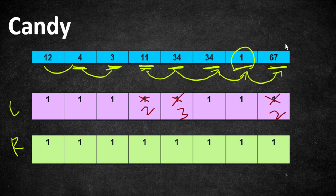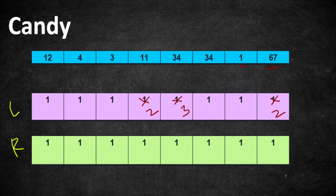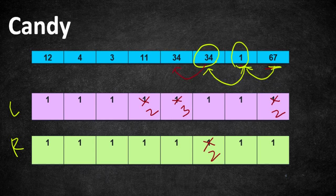Now we fill the right array by traversing from the rightmost child towards the left, comparing each child's right neighbor. Starting with 67 and 1: 1 has a lesser rating than 67, so 1 doesn't need extra candies. Moving to 1 and 34: 34 is a higher rating, so 34 deserves an extra candy — we fill the right array with 2 for that position. Moving to 34 and 34: they're equal, so no extra candies needed.